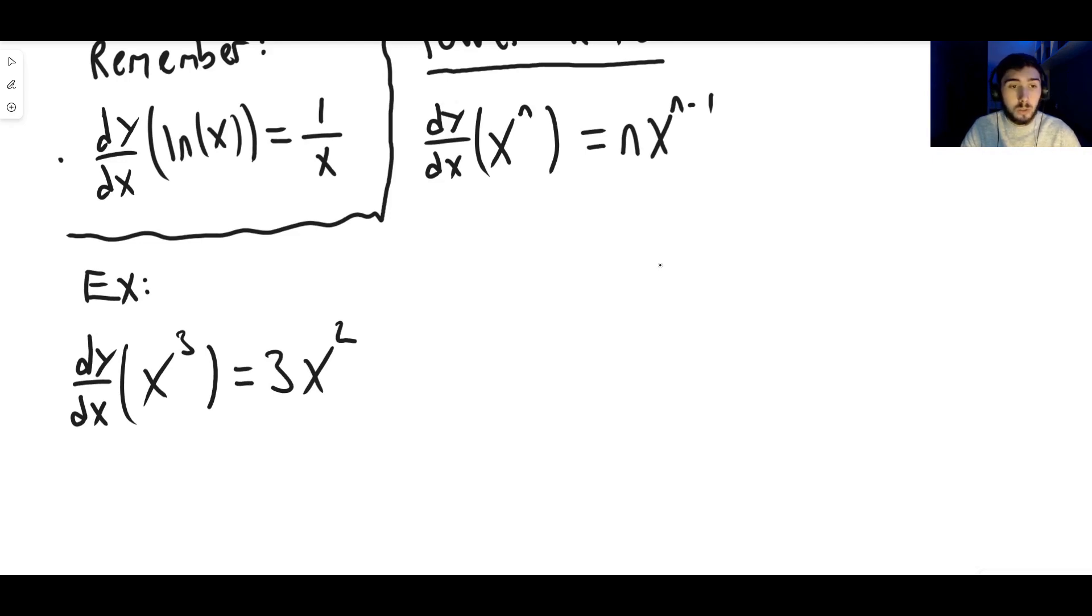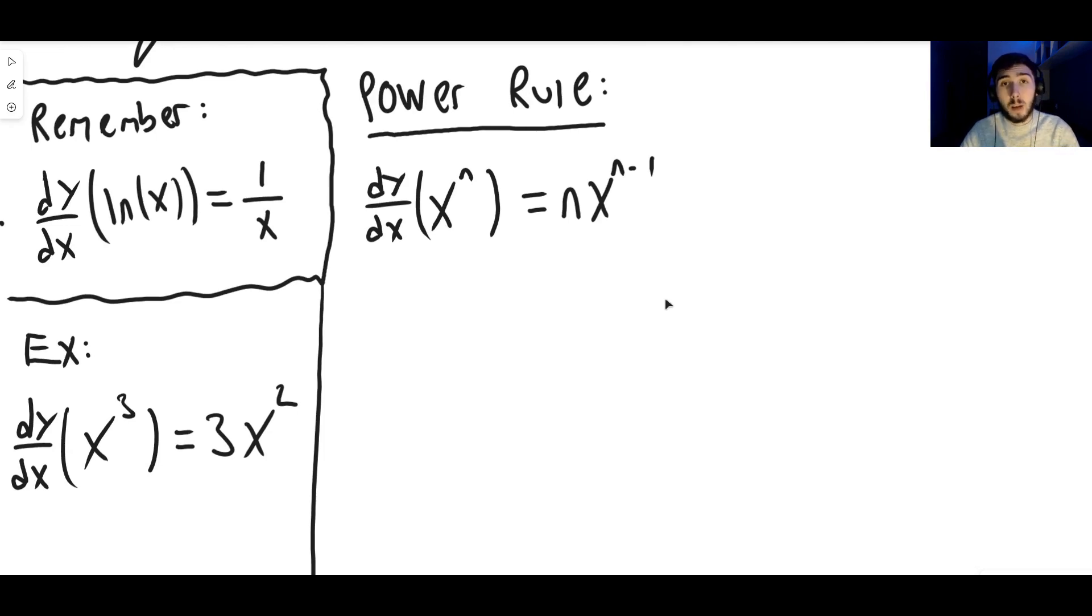And again, it works with anything. So the derivative of x to the five would be five x to the four and so on and so forth. It goes on just like that. So that's an example of the power rule in action. So we're going to derive where it comes from.